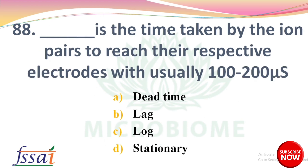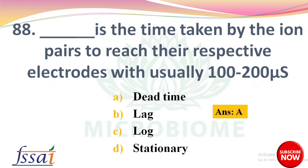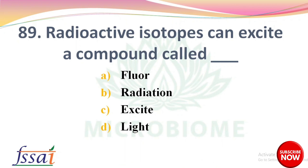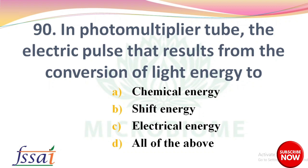Dash is the time taken by ion pairs to reach the respective electrodes, usually 100 to 200 ms — options: dot time, lag, log, stationary. The right answer: option A, dot time. Next: radioactive isotopes can excite a fluorescent substance — options: floor, radiation, light. The right answer: option A, fluorescence. Next: in a photomultiplier tube, the electric pulse results from a conversion of light energy to — options: chemical energy, shift energy, electrical energy, all of the above. The right answer: option C, electrical energy.